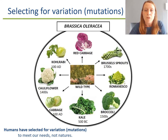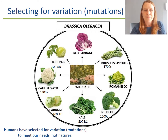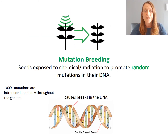These vegetables are very much dependent on humans for their survival — you wouldn't go for a walk in the park and find wild broccoli growing, for example. In the 1940s, mutation breeding was added to the plant breeder's toolbox, and this is where seed or tissues were exposed to chemicals or radiation in order to induce random mutations throughout the plant's genome.